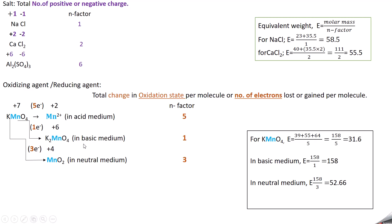In basic medium, KMnO₄ is converted to K₂MnO₄. Mn oxidation state: 2K gives +2, 4 oxygens give −8, so Mn must be +6. Change from +7 to +6 is 1, so only 1 electron is involved and N factor is 1.